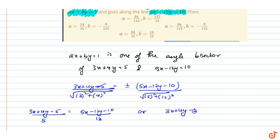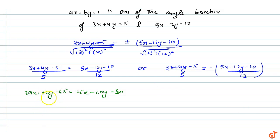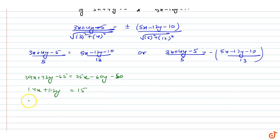Or (3x + 4y - 5)/5 = −(5x - 12y - 10)/13. Solving the first case: 39x + 52y - 65 = 25x - 60y - 50, which gives 14x + 112y = 15, or equivalently (14/15)x + (112/15)y = 1.